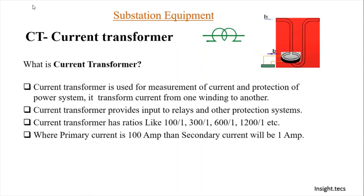So what is a current transformer? Current transformer is used for the measurement of current and protection of power systems. It transforms current from one winding to another and comes in various ratios like 100 ampere to 1 ampere, 300 ampere to 1 ampere, 600 ampere to 1 ampere, and so on. This means that when the primary current is 100 ampere, we will get 1 ampere in the secondary side.